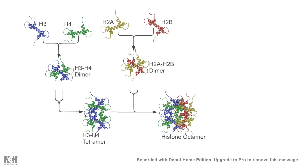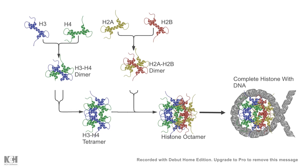There are many types of interactions stabilizing the nucleosome. One of these is the ionic interaction between the positively charged histone octamer and the negatively charged DNA backbone. That is how the nucleosome is stabilized.